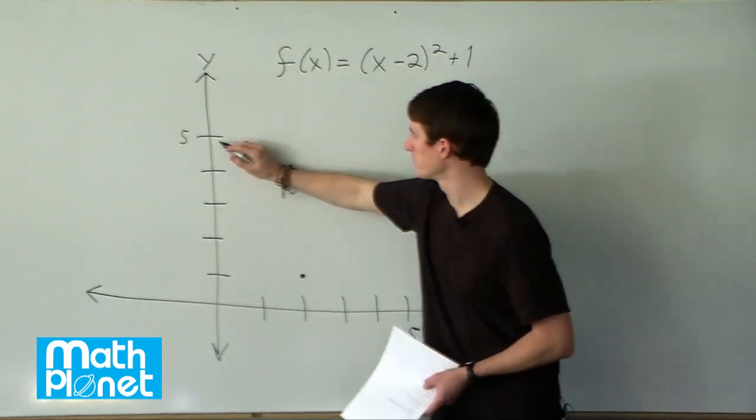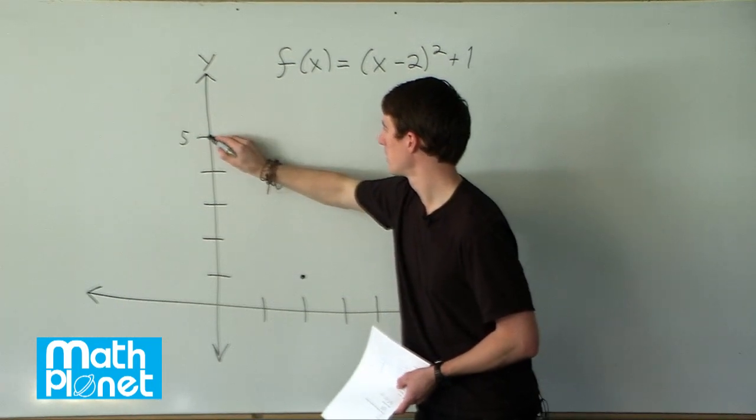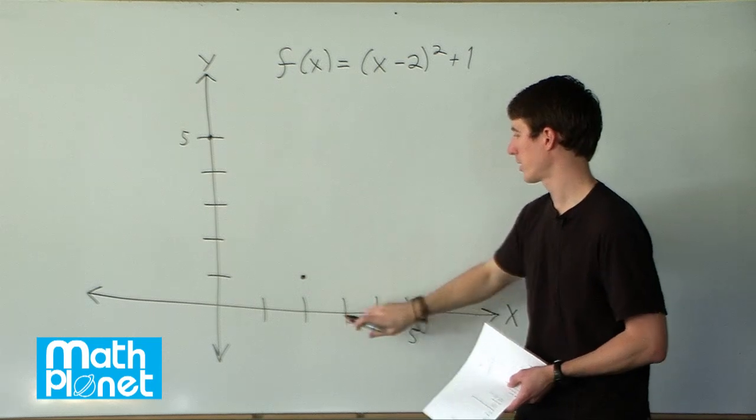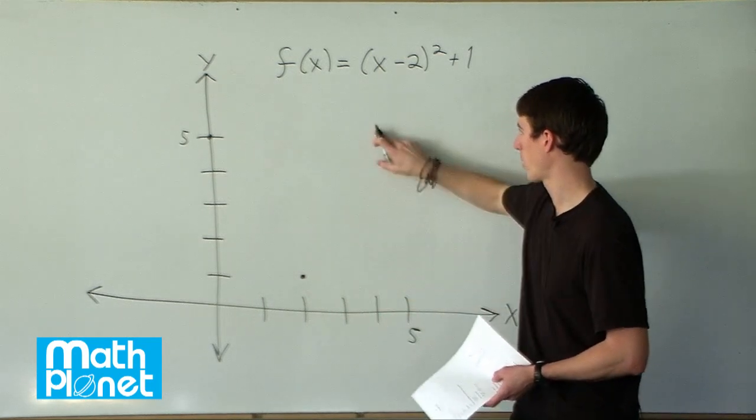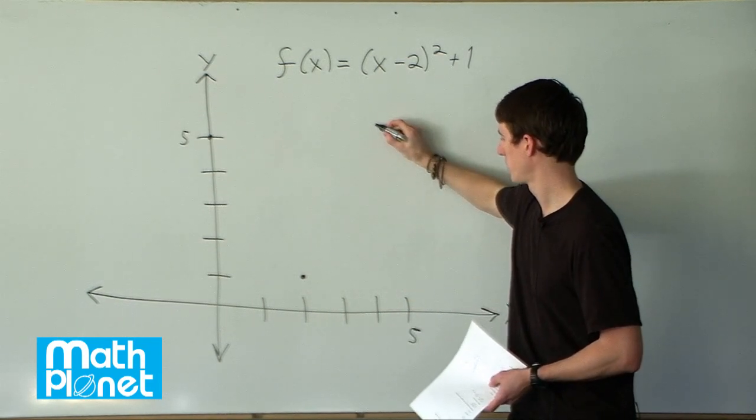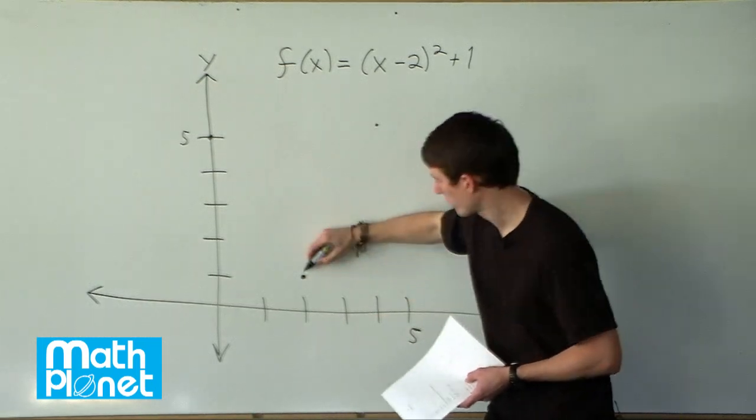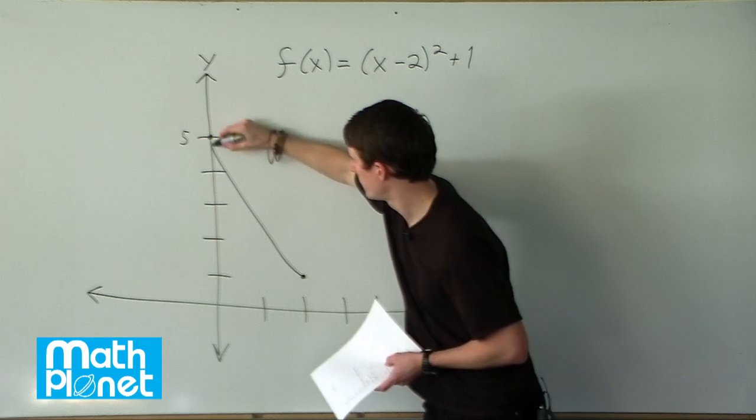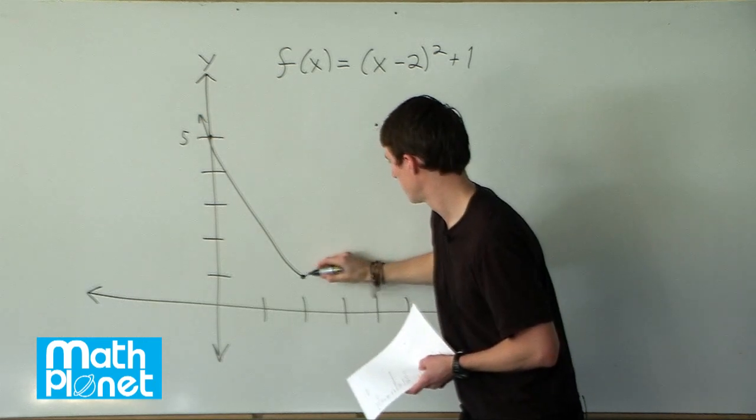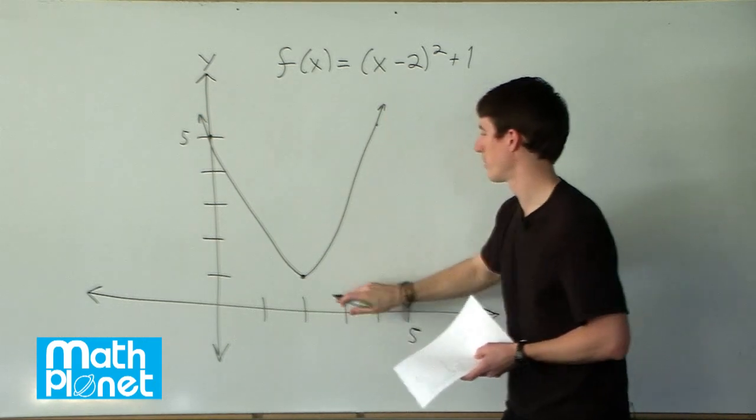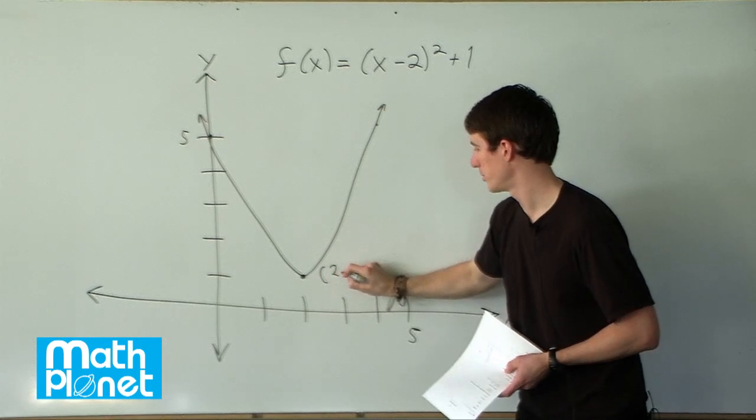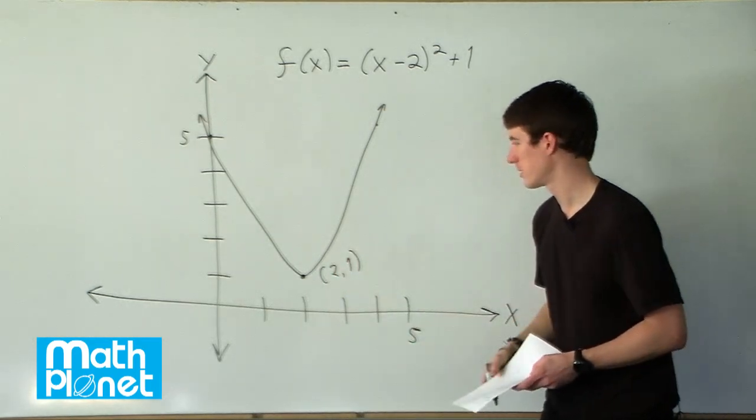So we go from here to here, and then it's symmetric about that point, so we can go over 2 and go up here as well. Now we're at 4 and 5, or the point 4 comma 5. So it's just a simple parabola with the minimum at this point of 2 comma 1. And that's it.